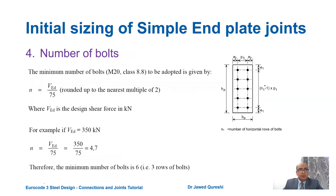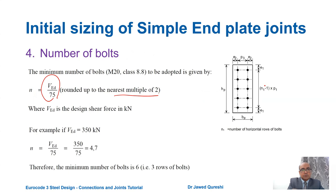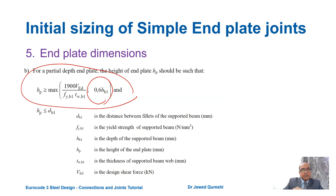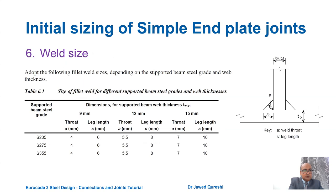The number of bolts can be found from Ved divided by 75, rounded to the nearest even number, where Ved is in kilonewtons. For end plate dimensions: if the height of the supported beam is less than 500mm, the end plate thickness can be 8 or 10mm and the end plate width has to be 150mm. The gauge p3 can be 90mm, and the height of the end plate is most commonly taken as 0.6 times the height of the beam.